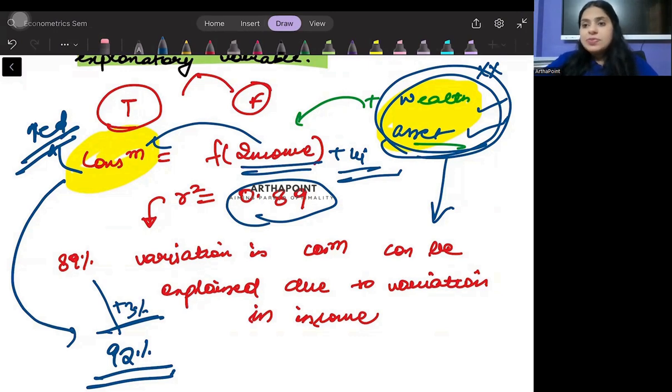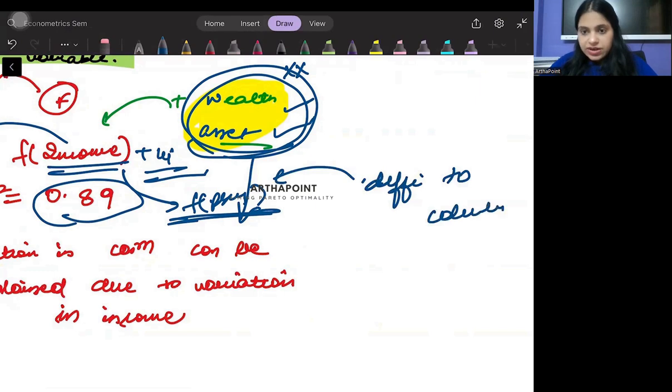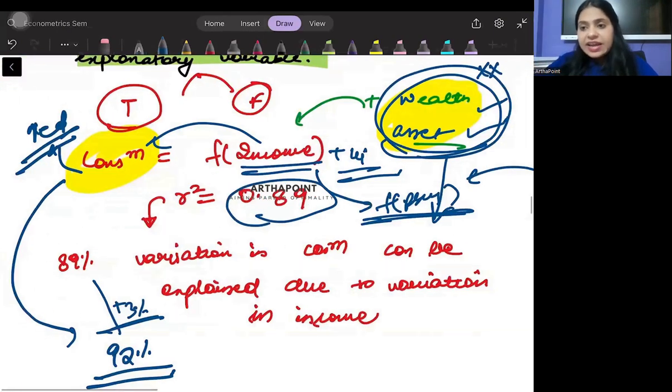I don't want to explain the remaining 11 percent a lot of times because it may mean making the model very complicated. For example, consumption can be a function of psychological impact, some psychological variable, and this psychological variable can be very difficult to calculate. So I don't want to put a lot of my time and effort in calculating this psychological variable and making my model complicated when I can actually work with an easier model.